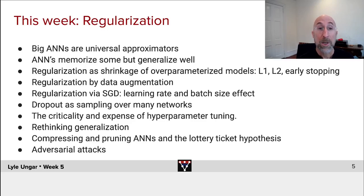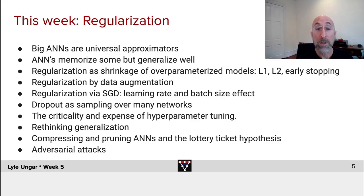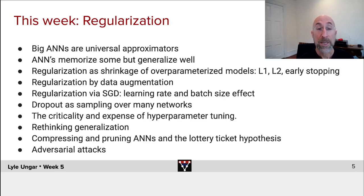So what will we do this week? We'll talk a lot about regularization: L1 penalties, L2 penalties, early stopping, and data augmentation. We'll talk about stochastic gradient descent, which is itself a form of regularization that works quite well. We'll review dropout and remind you there are many hyperparameters to tune across these six or seven different regularization methods. We'll discuss what these things mean for generalization, talk about how to compress and prune neural networks to make them smaller, and cover adversarial attacks — altering images or text to mess up classifications — and how to defend against them. Welcome to week five.